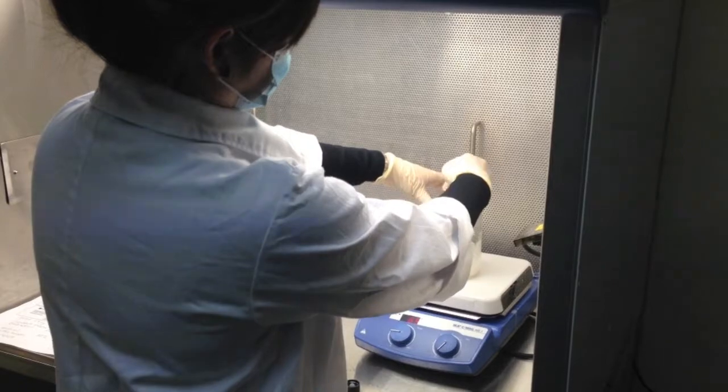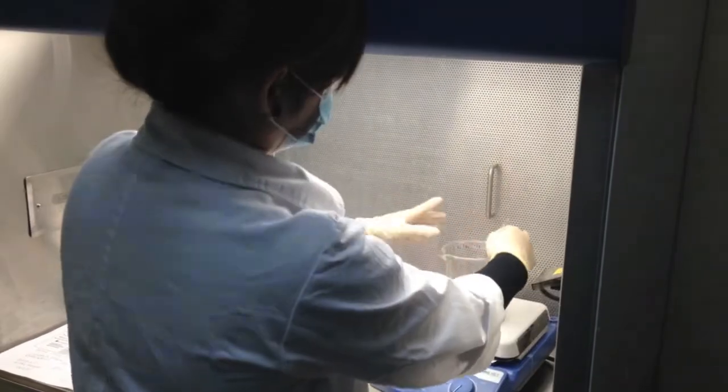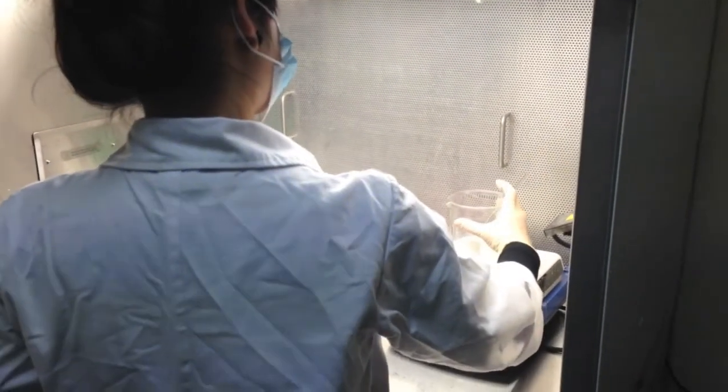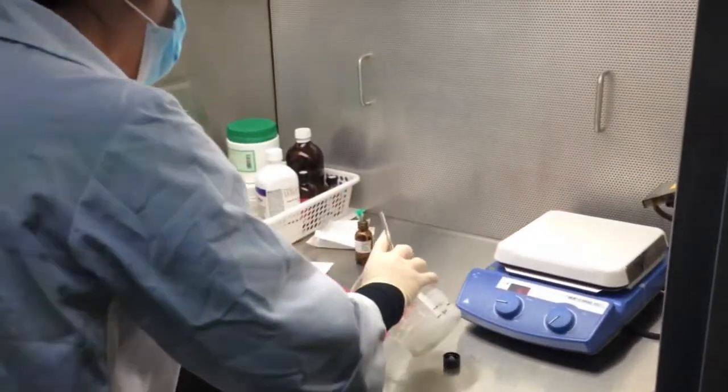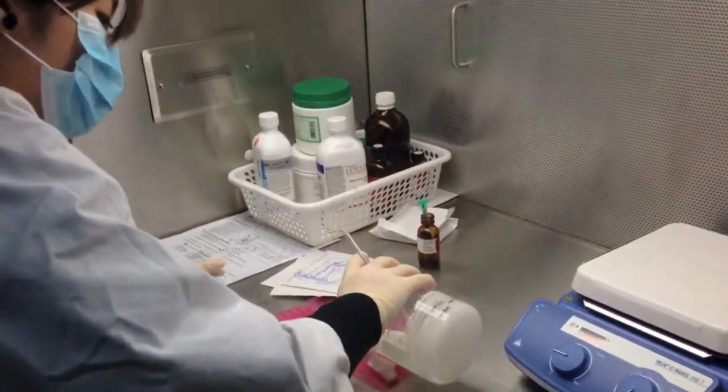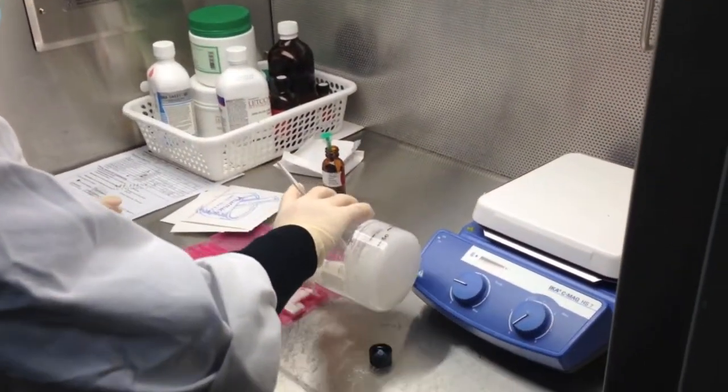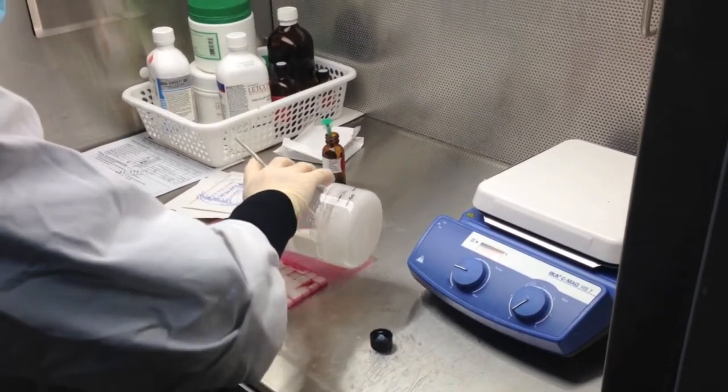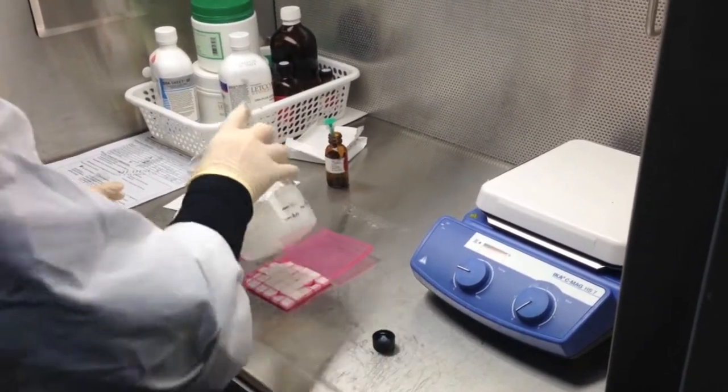Once a homogenous mixture is achieved, it can now be poured into the troche molds. Each of these two troche molds holds 30 troches.